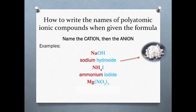What do you think the name of this next compound is? Remember to name the cation first, then the anion. I'll give you a few seconds to think about it. Well, the Mg ion is magnesium, and NO3 is nitrate, so this must be magnesium nitrate.